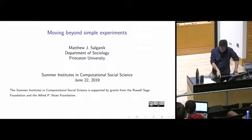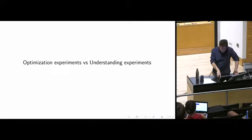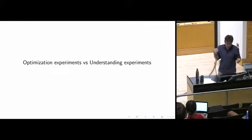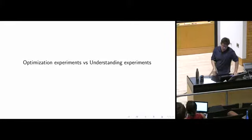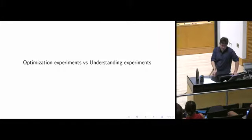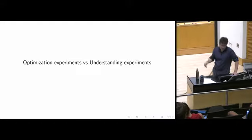Moving beyond simple experiments, you can broadly split experiments into two categories. Among data scientists or inside tech companies, you often see experiments where the goal is to optimize some quantity — for example, at Facebook they might optimize the amount of time you spend on the site, at Spotify they might optimize the chance that you go from being a free customer to a subscriber.